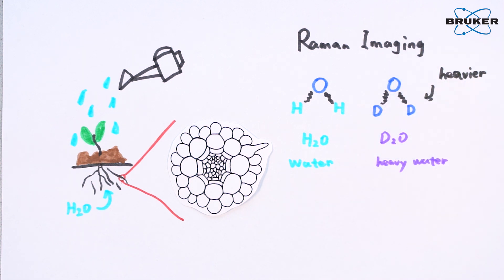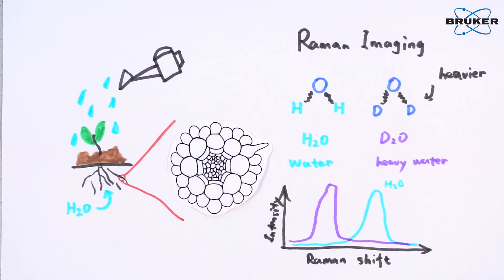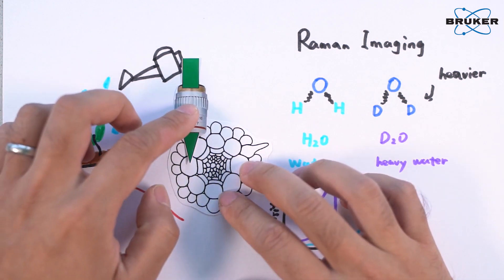But as the deuterium atoms are heavier, the frequency of the molecular vibration changes. Therefore, Raman spectroscopy can easily distinguish heavy water from normal water.